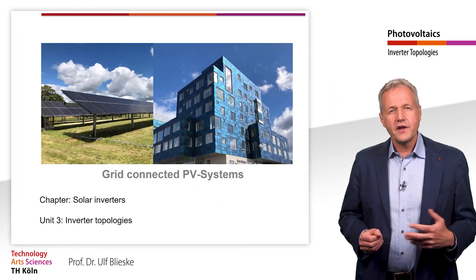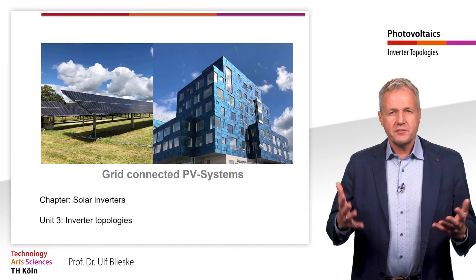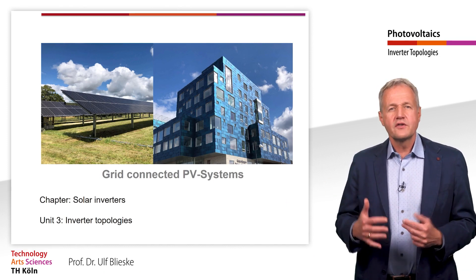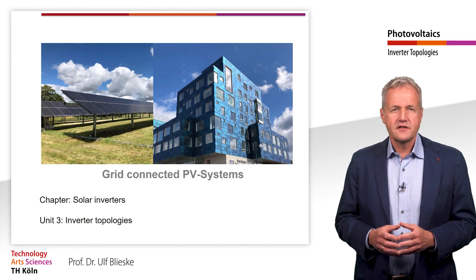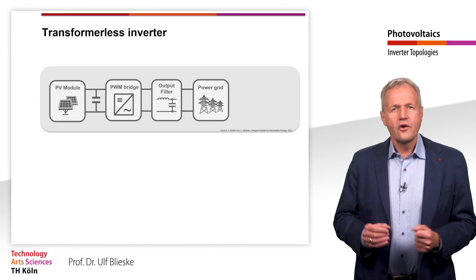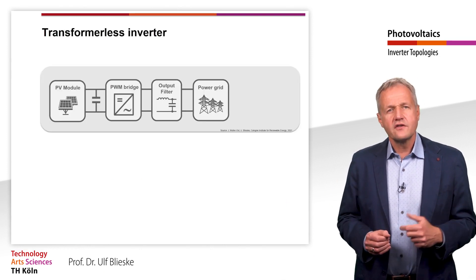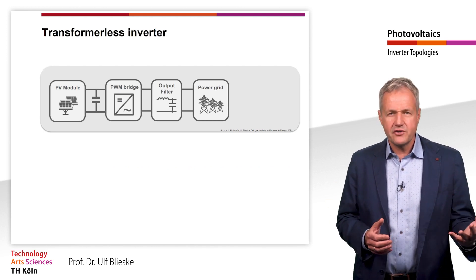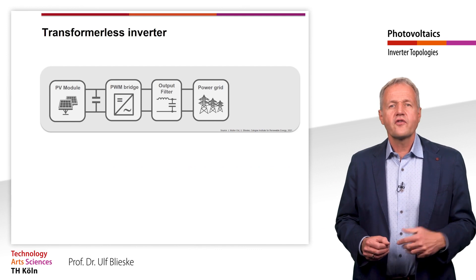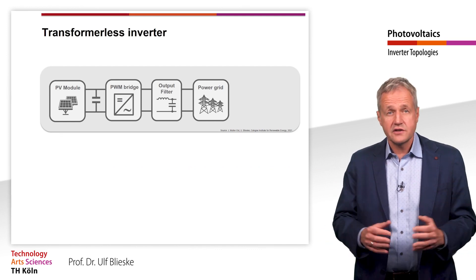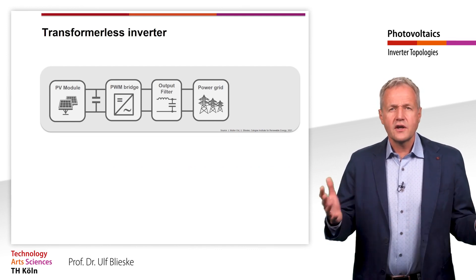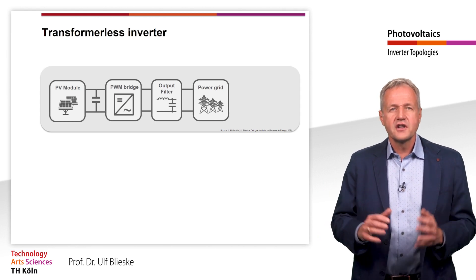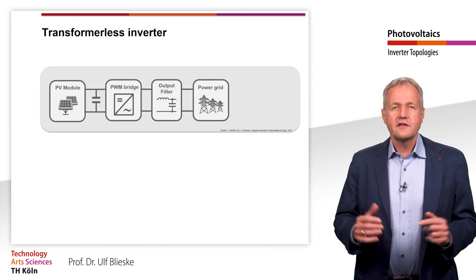Welcome to the third learning unit in the chapter Solar Inverters. This unit will deal with solar inverter topologies. In the last two learning units, the two core functions of a solar inverter have been explained: the MPP tracking and the conversion from direct to alternating current. Here you can see a simplified representation of the circuit that we worked out in the last unit.